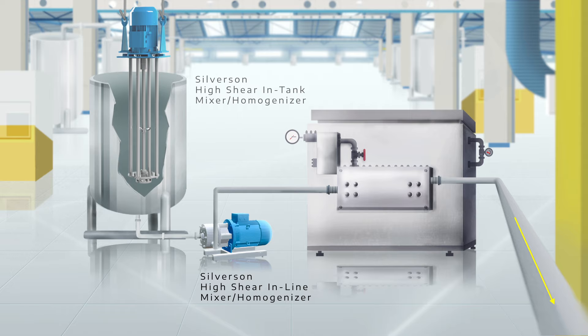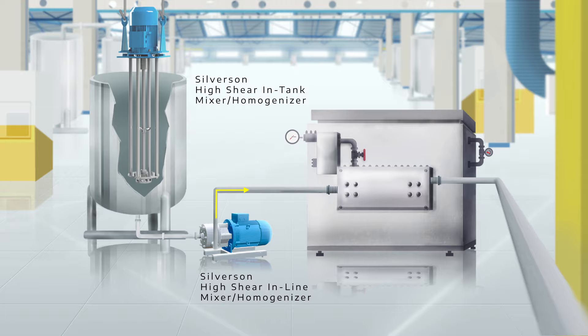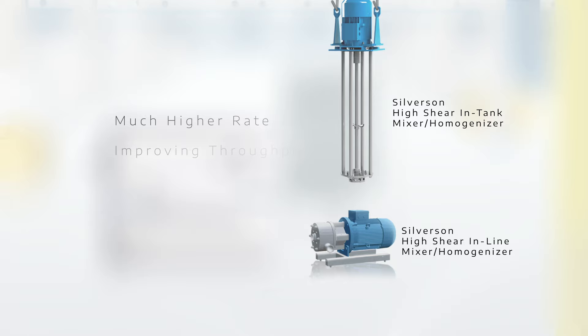Throughputs can be dramatically increased by pre-processing the product with a Silverson high shear in-line or in-tank mixer homogenizer. A pre-mix manufactured with a Silverson mixer will pass through the high-pressure homogenizer at a much higher rate, dramatically improving throughput, process efficiency and operating costs.